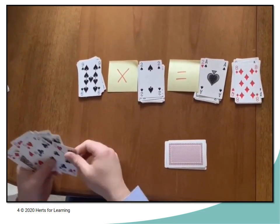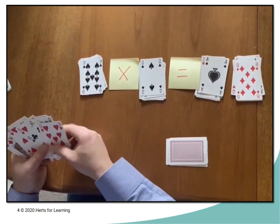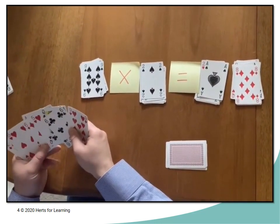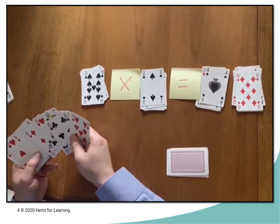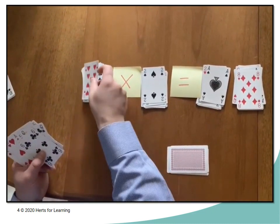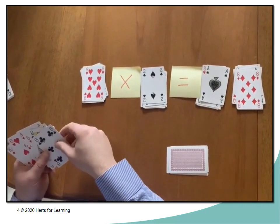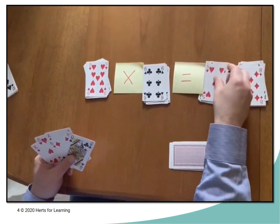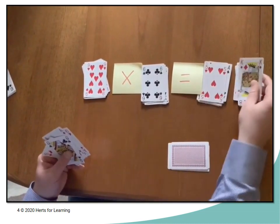And at the end of the game, so whoever finishes first or if neither player can go at all, you're going to find the sum of the cards that you've got in your hand. So this is where tactics come in because you probably want to think about getting rid of your higher value cards.